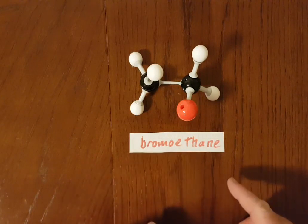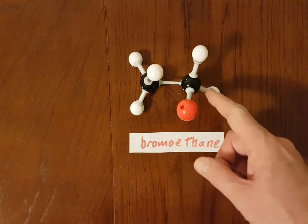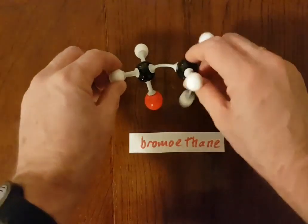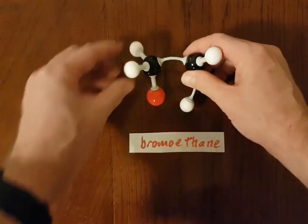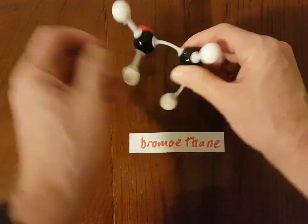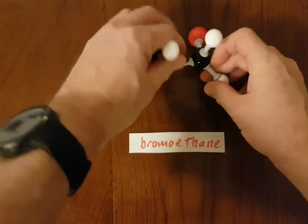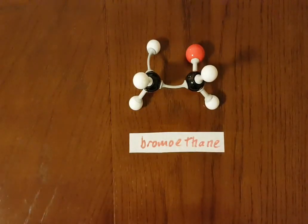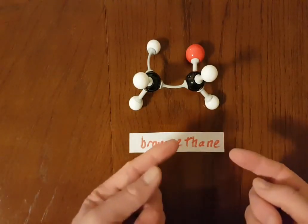You don't need any numbers because is it 2-bromoethane or is it 1-bromoethane? Well, it's always going to be the same. What about if the bromine's up here or there? Or if it's over here or over there? No, no, no. It's all the same. It's all just bromoethane. No numbers required because there's only one sort of bromoethane.